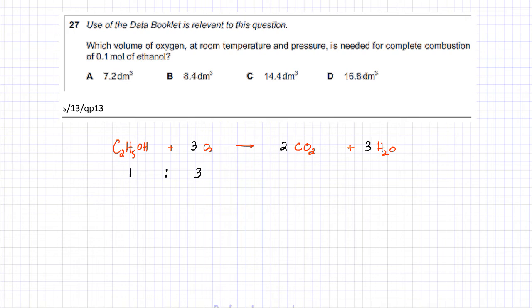Now in the question you're given 0.1 moles of ethanol, so if you have 0.1 moles of ethanol, then it's pretty obvious according to the ratio, the amount of oxygen that would be used, because it's one ratio three, that would be 0.3 moles of oxygen gas.